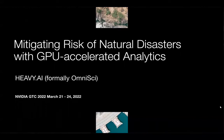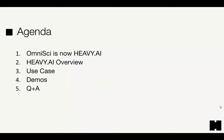Hi everybody. I'm here to present 'Mitigating Risk of Natural Disasters with GPU Accelerated Analytics.' We are Heavy AI, formerly known as OmniSci. I wanted to go over a few different things: first, the rebranding and the background behind it very briefly, then give you an overview of what Heavy AI does, and then spend most of the time on some use cases and demos, followed by Q&A.